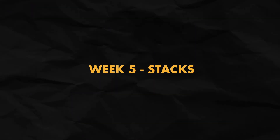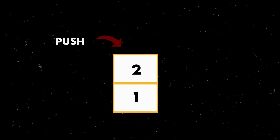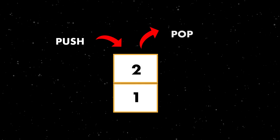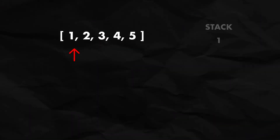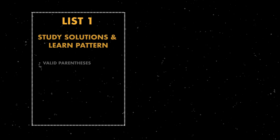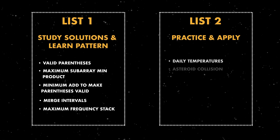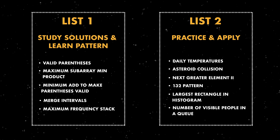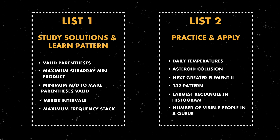Next in week 5 is stacks. A stack is a last-in, first-out data structure — whatever value goes in last comes out first — and it's used a lot to solve questions optimally. You iterate through an array, push each item into the stack, and pop them out. Stack questions are quite similar to each other and it boils down to deciding when to push an item to the stack and when to pop one.